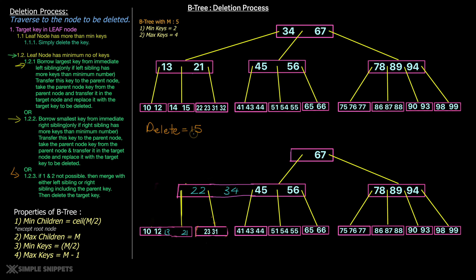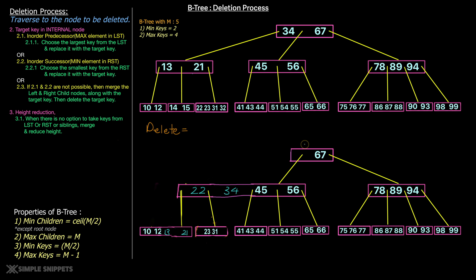Now let's cover Case 2: the target key is in an internal node, not a leaf node. The internal nodes in our tree are the non-leaf ones. Let's delete 56. Option 2.1 is the in-order predecessor: choose the largest key from the left subtree and replace it with the target key.